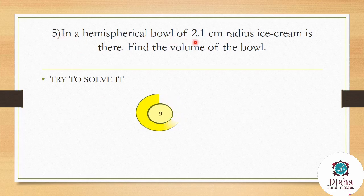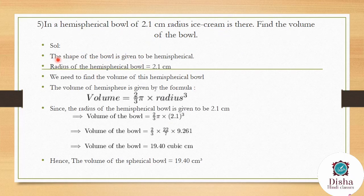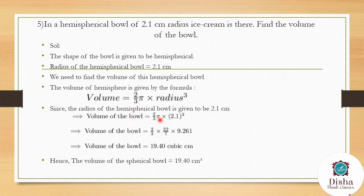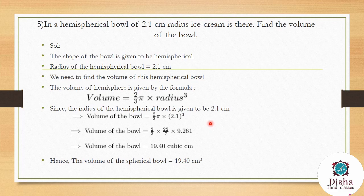A hemispherical ball has a radius of 2.1 cm. Find the volume. Volume of hemisphere = (2/3)πr³ = (2/3) × (22/7) × (2.1)³ = (2/3) × (22/7) × 9.261 = 19.40 cm³. So the volume of the hemispherical ball in which ice cream is present is 19.40 cm³.